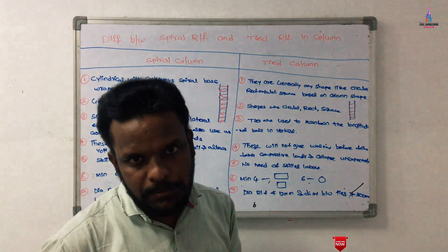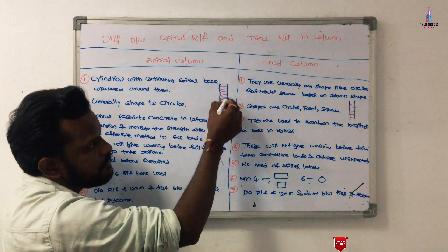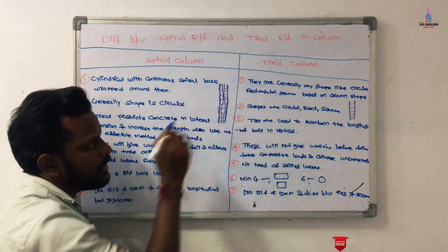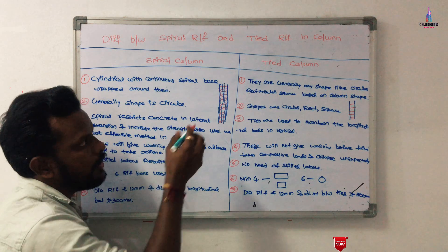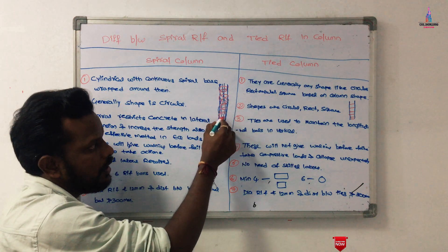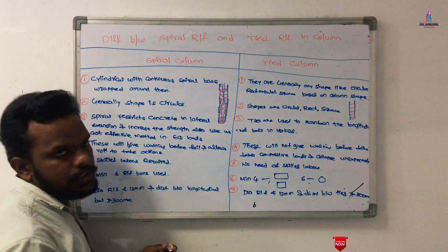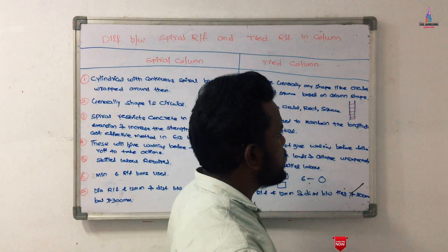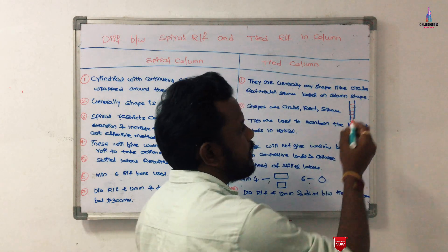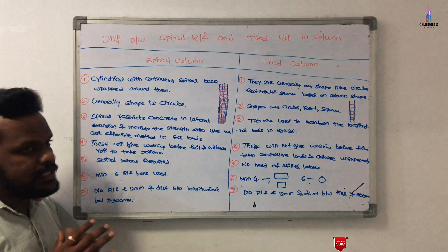I will explain the basic difference between spiral reinforcement and tie reinforcement using a diagrammatic representation. Consider a vertical column bar — this is the front view. For the spiral reinforcement, the stirrup or lateral ties consist of a continuous spiral member. For tie reinforcement, the main vertical reinforcement bars are connected with lateral ties between them.